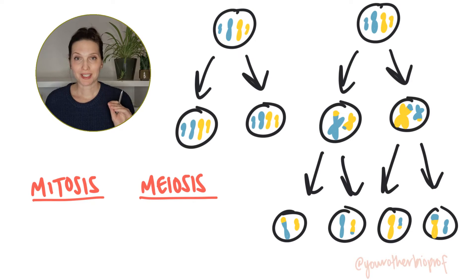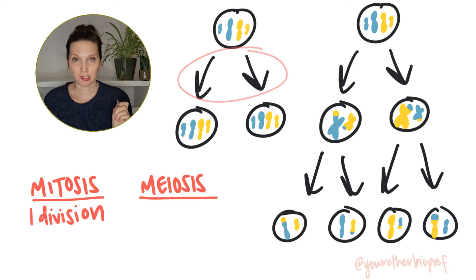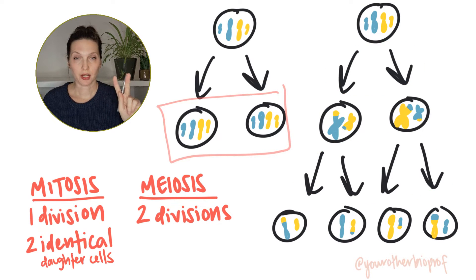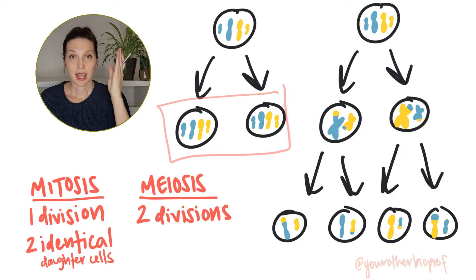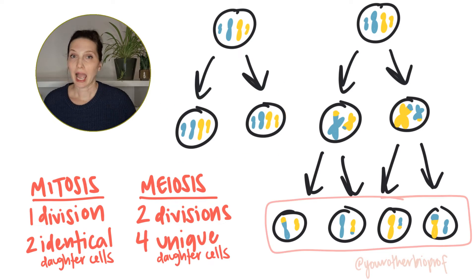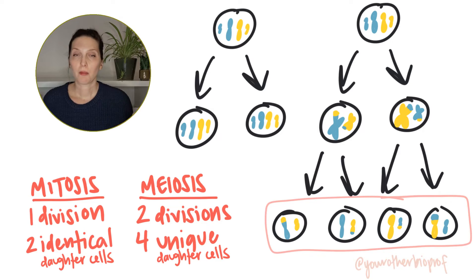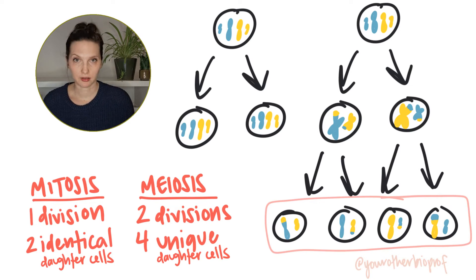Note that mitosis is a single round of division, whereas meiosis has two divisions. Mitosis is going to produce two daughter cells that are identical to each other and to that original parent cell. Whereas after meiosis is completed, you're going to have four daughter cells that are not only different from each other, but also very different from that original parent cell.